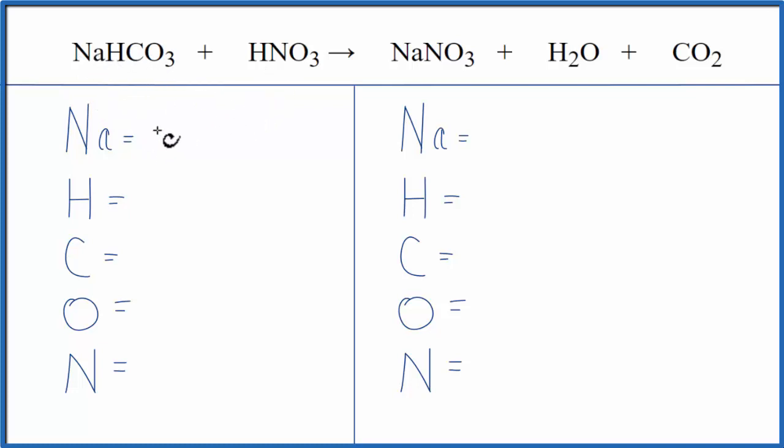Let's add the atoms up. We have one sodium, one hydrogen, and we've got to count this hydrogen here too. So we have two hydrogens, then we have one carbon, we have three oxygens here, plus we have three here. So we have six oxygens.